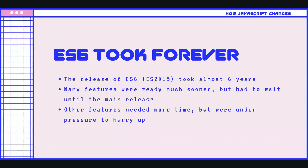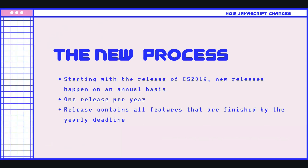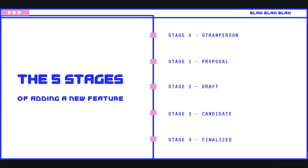So after ES6, TC39 changed things up. They added a new process where features are added to the spec on a yearly basis whenever they're ready. Every year we get a named release — ES2016, ES2017, and so on — they happen on an annual basis, and the release just contains whatever features have been finalized by that yearly deadline. So if a feature doesn't make ES2025, then it's probably going to make ES2026 if it's ready. It actually takes quite a long time for these features to be added in, but that's by design.